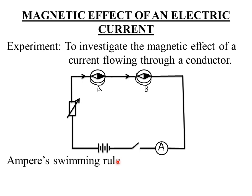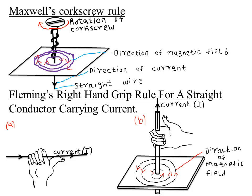So once again, Ampere's swimming rule states that if one imagines one is swimming along a wire in the direction of the current and facing the compass needle, then the north pole of the needle will be deflected towards the swimmer's left hand.